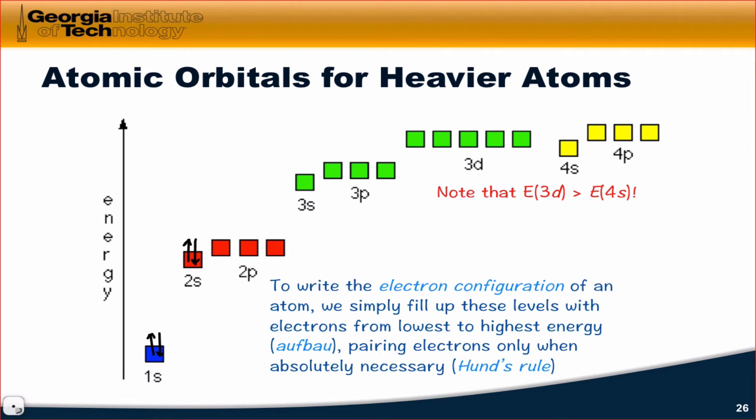Notice that the n equals 2 level now, the 2p orbitals are higher in energy than the 2s orbitals, and that's distinct from the situation for hydrogen, where the 2s and 2p orbitals were all at the same energy.